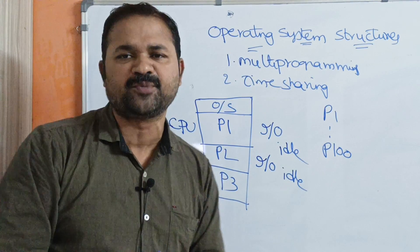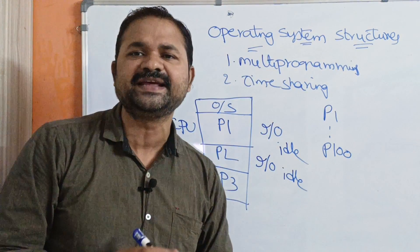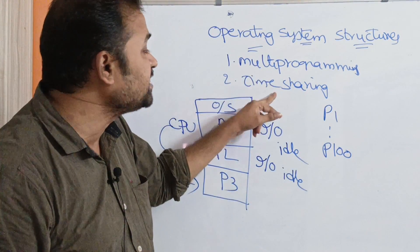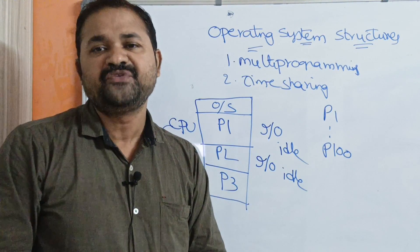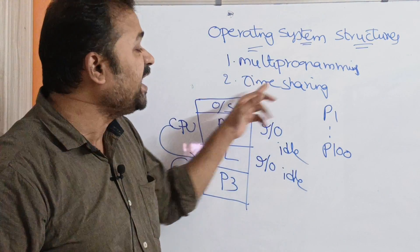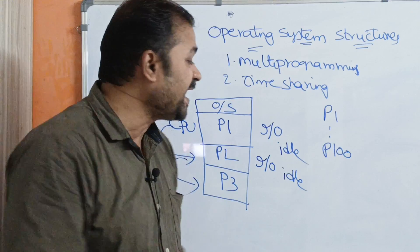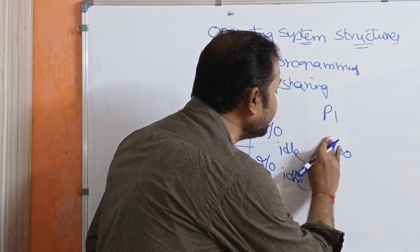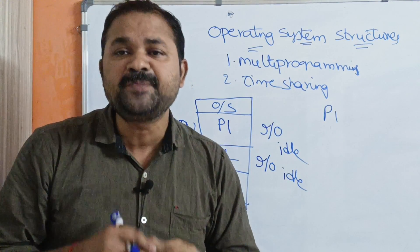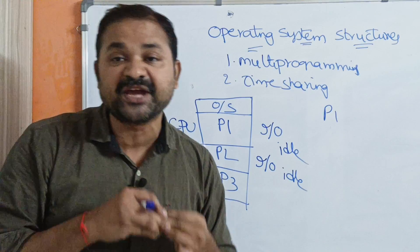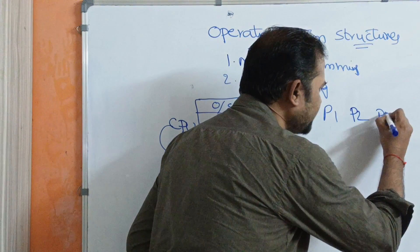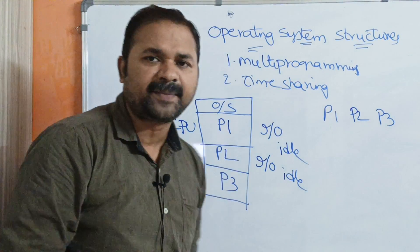This is the advantage of multiprogramming — keeping more number of programs in the main memory so that we can utilize CPU performance in an effective manner. Now let us see about the second one: time sharing system. Time sharing is an extension to multiprogramming, where the CPU time will be shared between the available processes. Let us say we have three processes P1, P2, P3 present in the main memory.